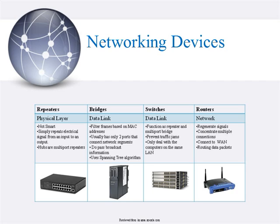Second, bridges. Bridges work at the data link layer of the OSI model, used to convert network data formats and perform basic data transmission management. They provide connections between local area networks. One of their functions is to make intelligent decisions about whether or not to pass signals onto the next segment of a network. Do not confuse routers with bridges — routers work at the network layer and filter packets based on IP addresses, whereas bridges work at the data link layer and filter frames based on MAC addresses. Bridges do pass broadcast information; routers don't. The spanning tree protocol allows bridges to discover a loop-free topology subset and ensures connectivity to every portion of the network.